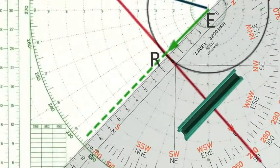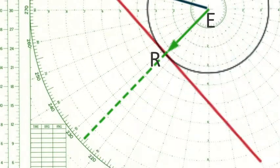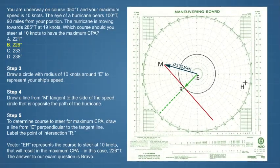Vector ER represents the course to steer at 10 knots that will result in the maximum CPA, in this case 2-2-6 degrees true. The answer to our exam question is bravo.